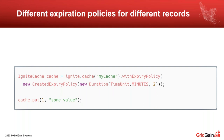Another interesting feature: the example I showed defines a global expiration policy for all records in that cache, but you can also set per-record expiration. For instance, you can create a special reference to a cache with an additional duration — here I'm creating a reference with duration two minutes, so once I put a record using this reference, it will expire in two minutes instead of the global five minutes. That's how you override global expiration policies on a per-record basis.